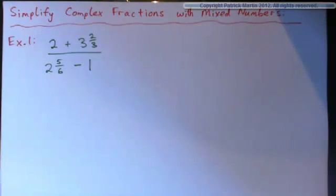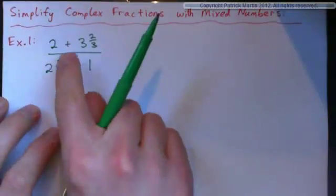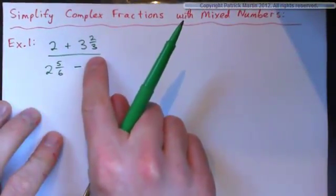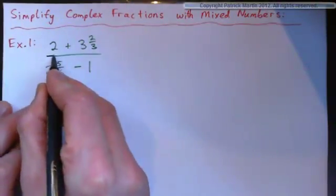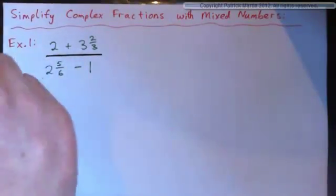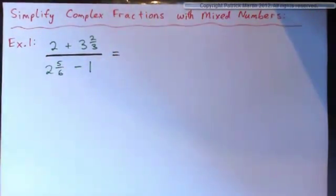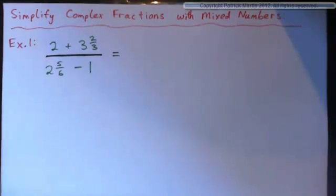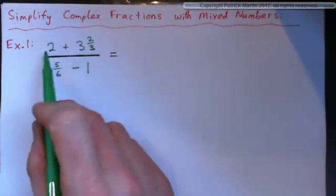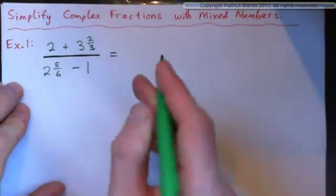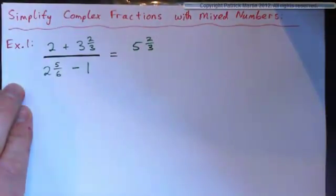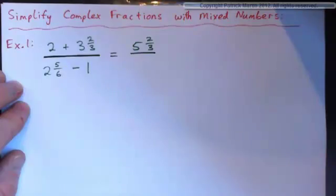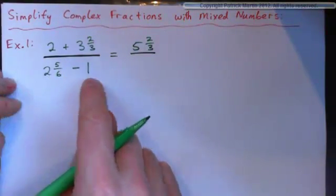Let's start with example 1. We have 2 plus 3 and 2 thirds on top. How would you do this? Remember, this fraction bar is going to turn into a division at some point. When I see that, I think I'll just add those together — 2 and 3 and 2 thirds is just 5 and 2 thirds. Then on the bottom: 2 and 5 sixths subtract 1.